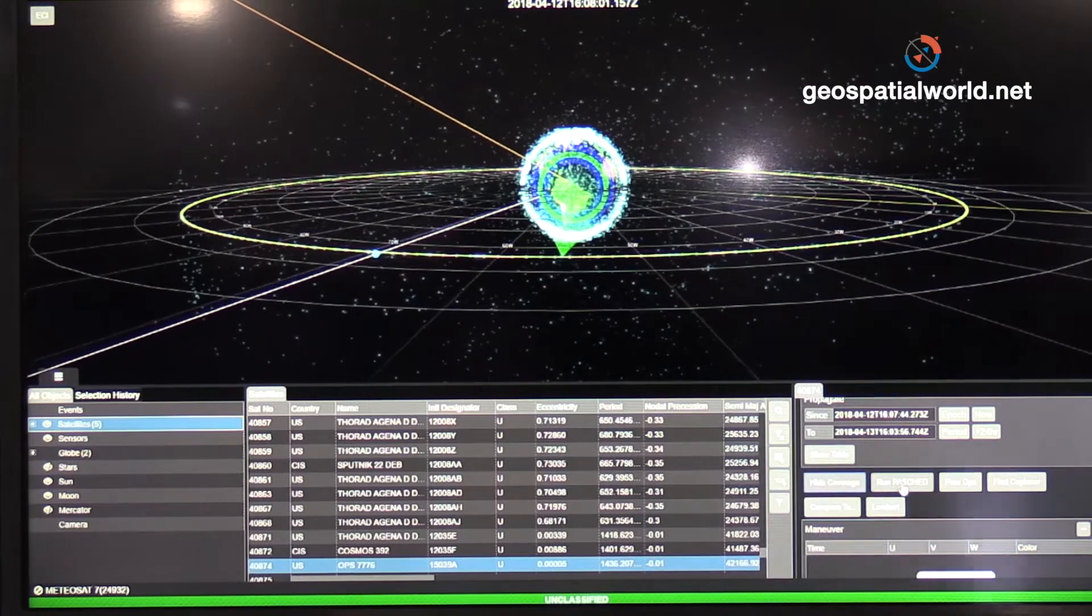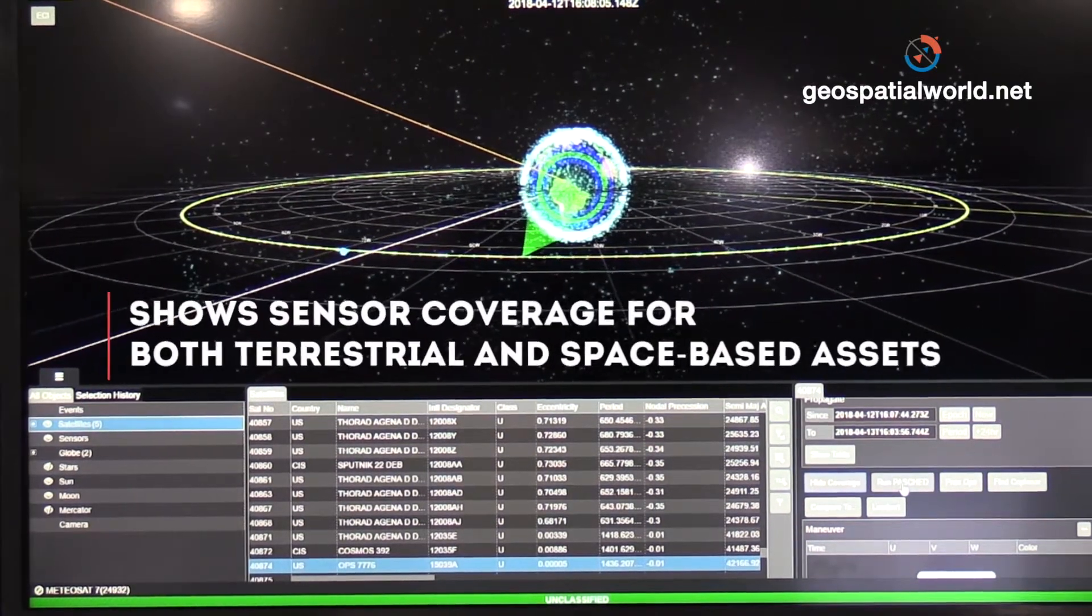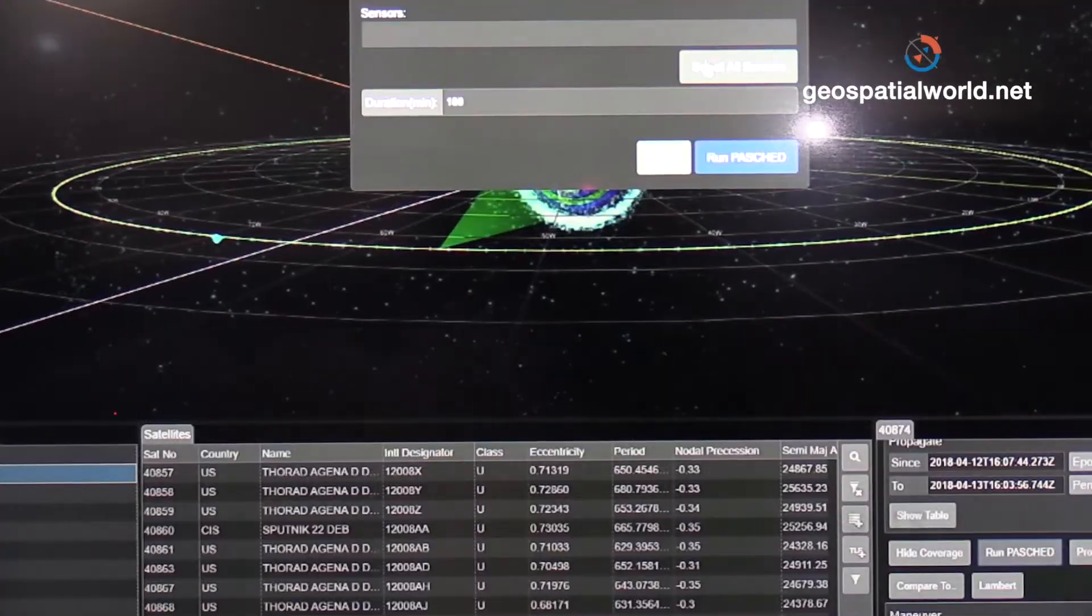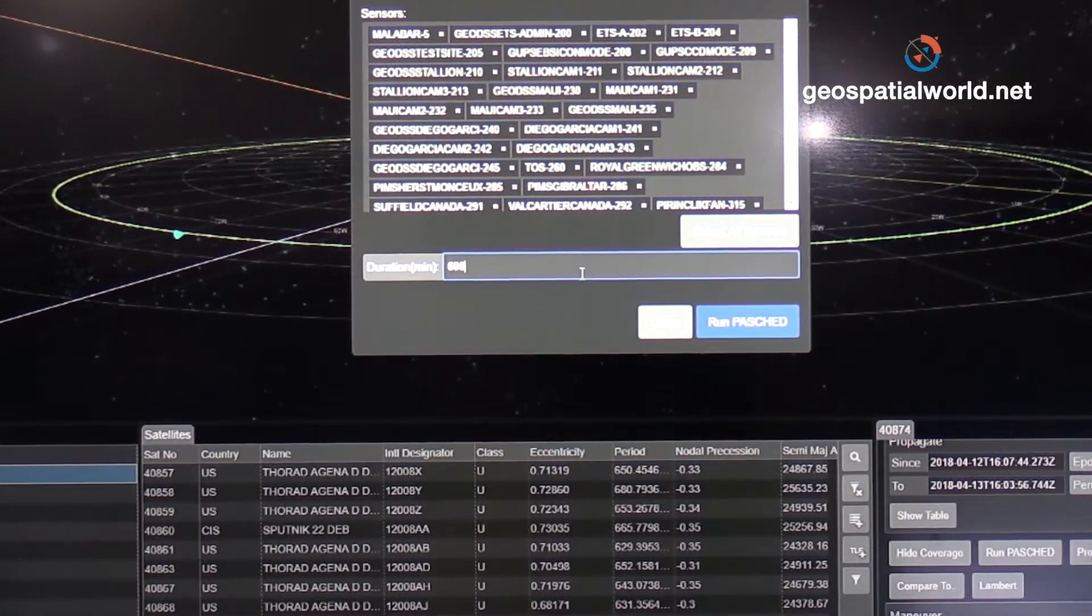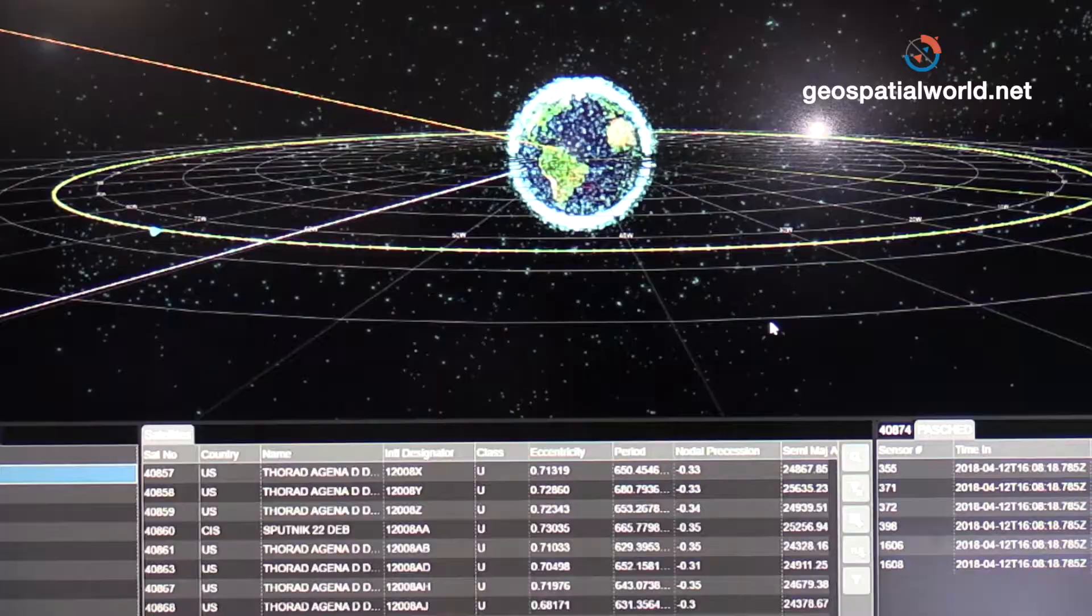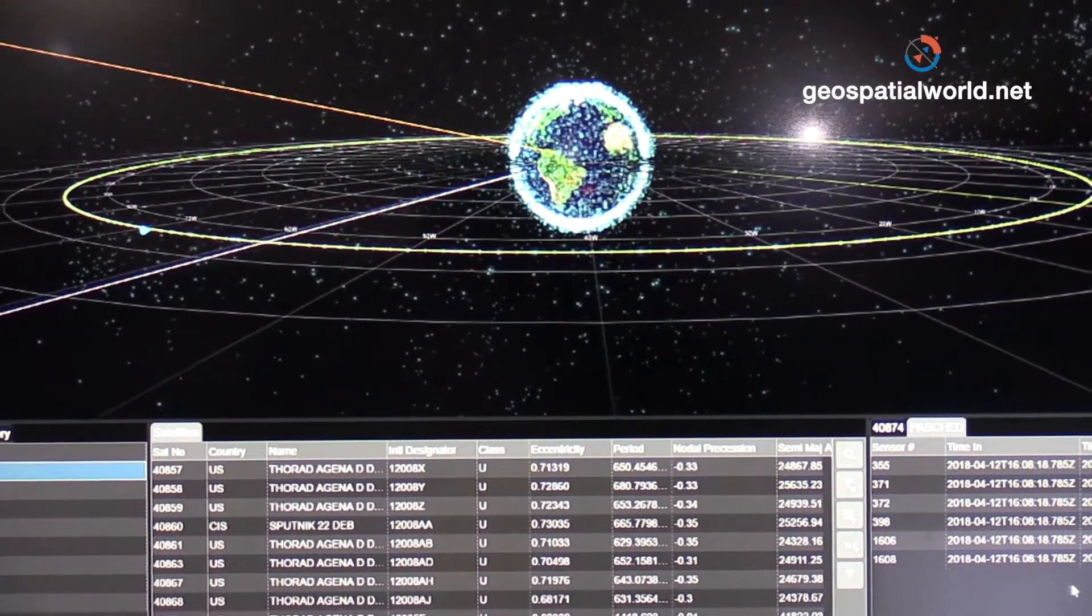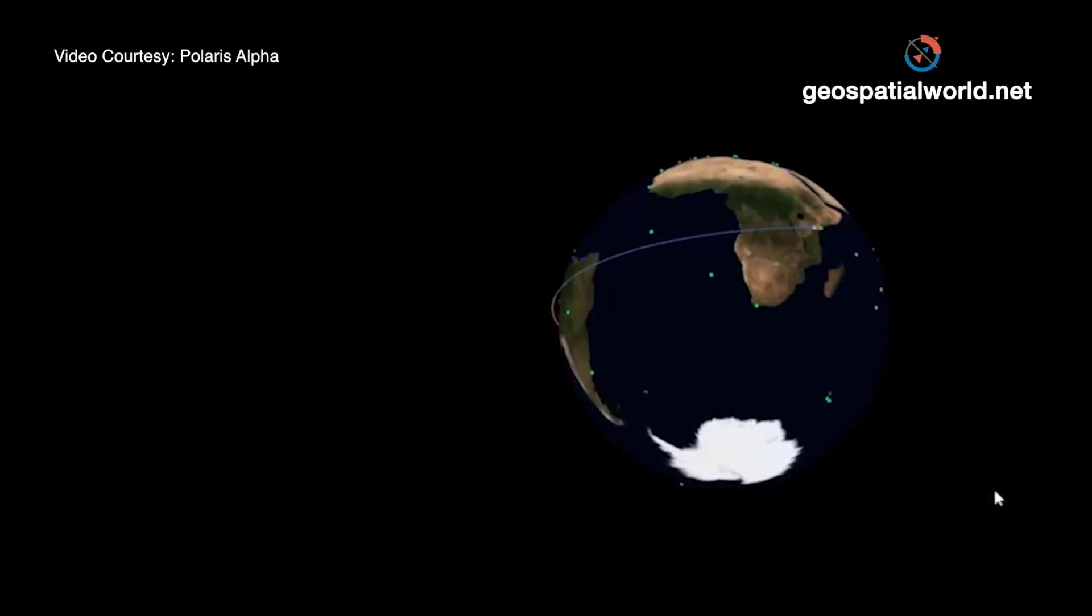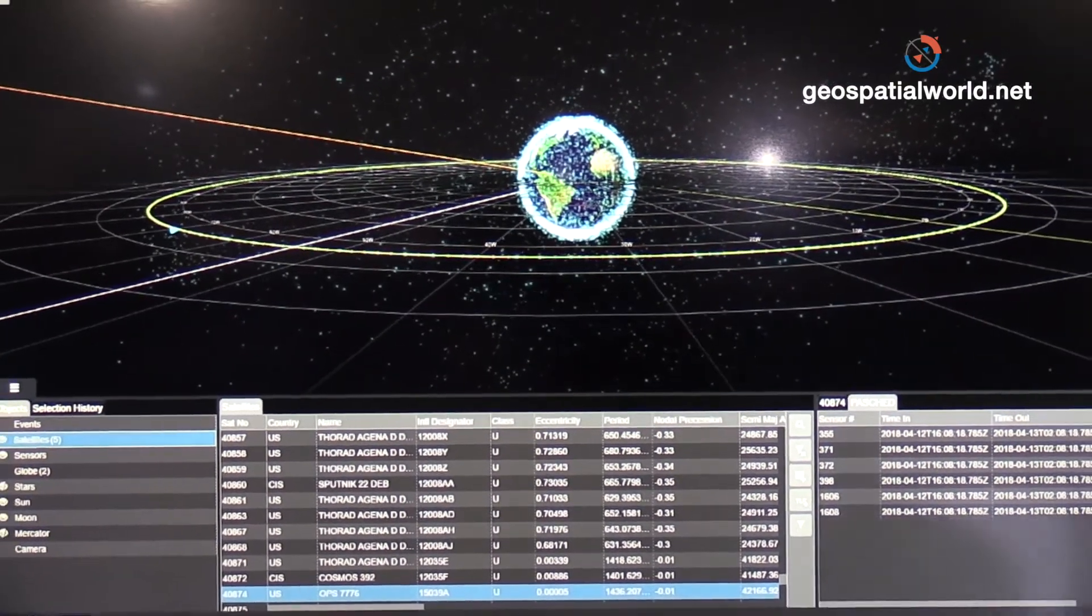Next, we'll demonstrate a pass schedule. This is a sensor schedule that shows all the sensors that can get eyes on this satellite. I'm going to ask for all sensors in my network. I'll run this for the next 600 minutes. It gives me all the sensors on the ground that can get visualization of this satellite. In this case, we get a handful that can see this satellite for the next 600 minutes.